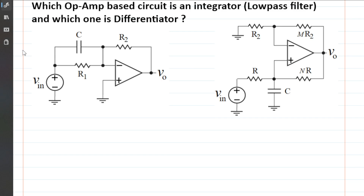Two op-amp based active circuits are shown here — one of them realizing an integrator, the other one realizing a differentiator. Let's analyze to see which one is doing integration and which one is not.